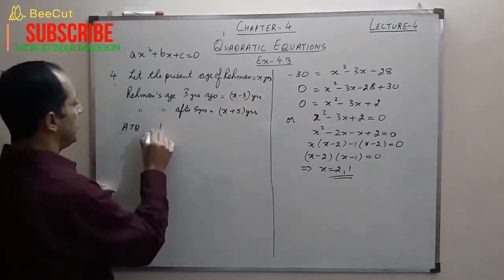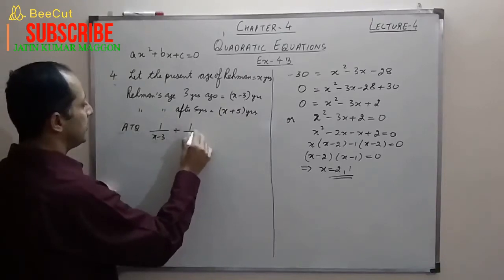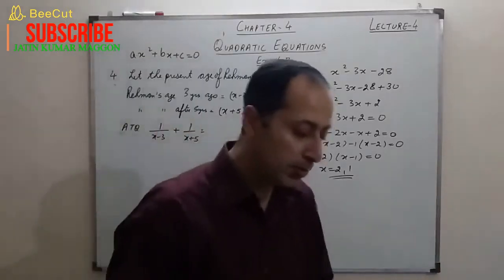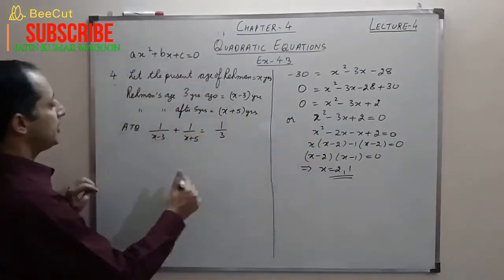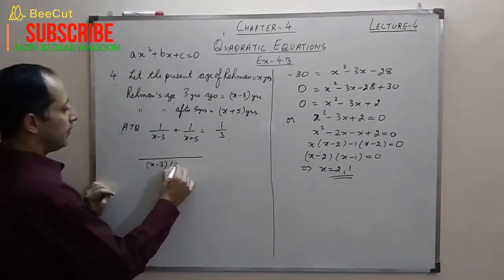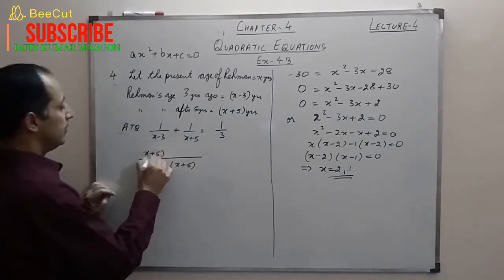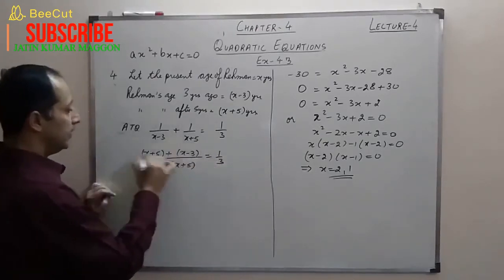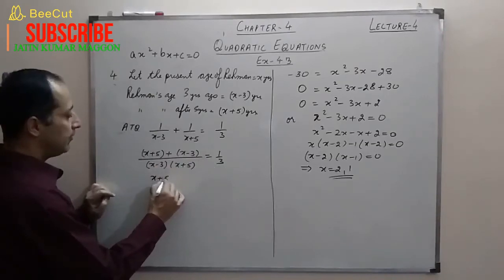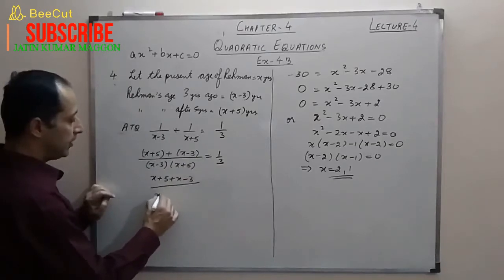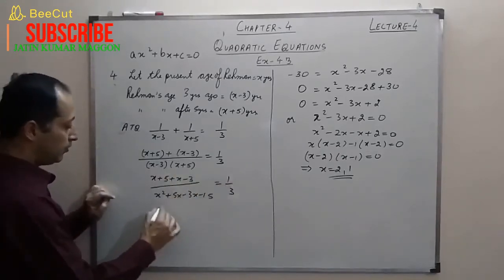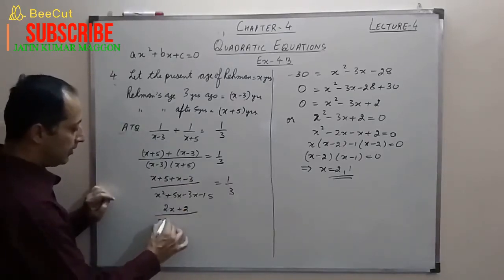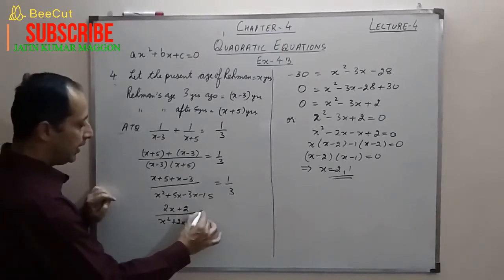So: 1/(x−3) + 1/(x+5) = 1/3. Taking LCM as (x−3)(x+5), the numerator becomes (x+5) + (x−3) = 2x+2. Expanding the denominator: x²+5x−3x−15 = x²+2x−15. So (2x+2)/(x²+2x−15) = 1/3. The next step is to cross-multiply.